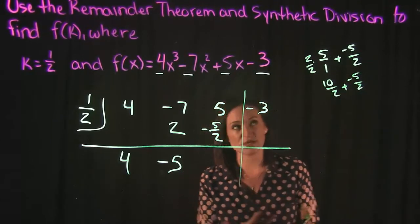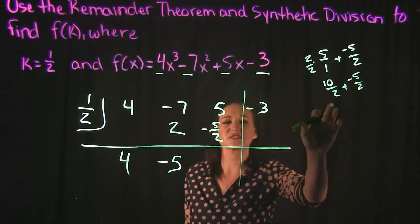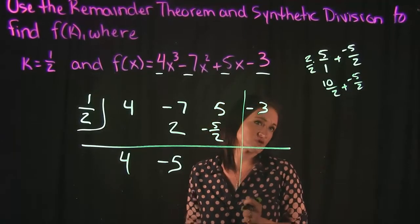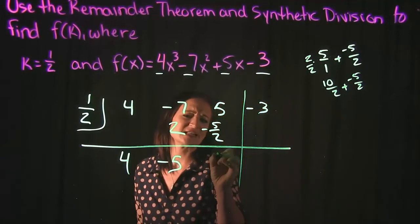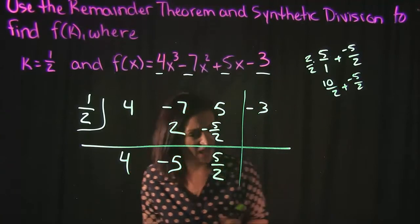Get common denominators of a 2. So we get 10 halves plus negative 5 over 2 and when we add that together we get a positive 5 halves.